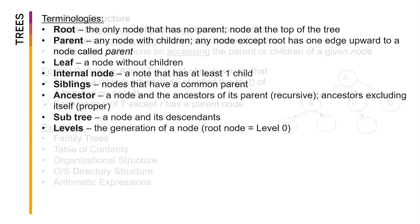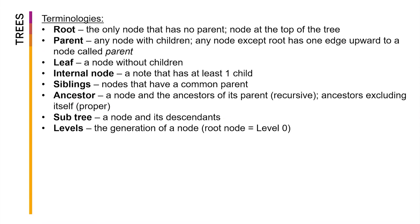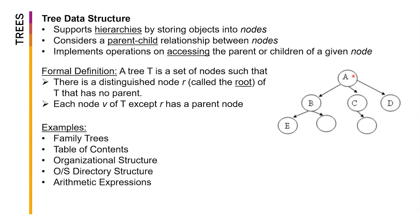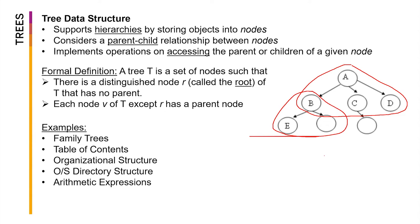A sub-tree is a node and its descendants. For example, A along with B, C, and D forms a sub-tree of the entire tree T. Alternatively, B together with E and empty nodes is also a sub-tree of the entire tree T. Any node and its descendants constitute a sub-tree.